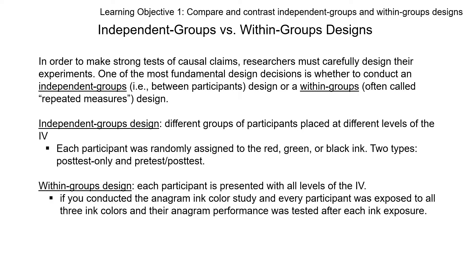By contrast, within groups design involves having some parallel between a participant in one condition and a participant in another condition. In the main type — repeated measures — each participant is presented with all levels of the independent variable, and that matching or pairing mechanism is the same individual. So the same individual gets drug A and drug B. Within our samples we can match someone's result from drug A with their specific result from drug B.